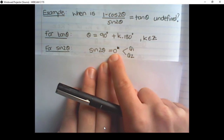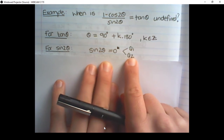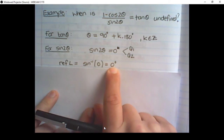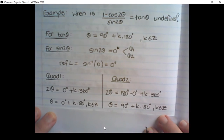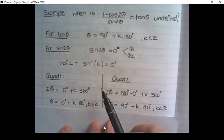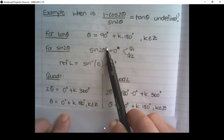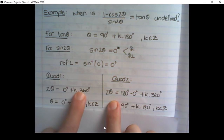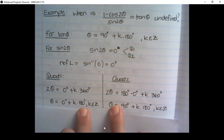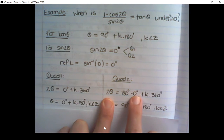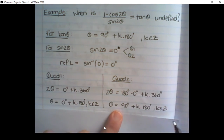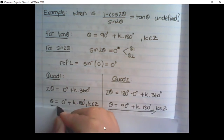We treat zero as a positive value, so we refer to quadrant 1 and quadrant 2. We find that sin equals zero at 0°. Because we are using sin 2θ, in our equation we have 2θ. In quadrant 1: 2θ equals 0° plus k times 360°, then divide everywhere by 2. In quadrant 2: 2θ equals 180° − 0° plus k times 360°, then divide everywhere by 2.